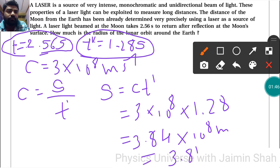Now to convert into kilometer by thousand, so 3.84 into 10 raise to 5 kilometer. So this is the distance from earth to moon. We can also tell that this is the radius of the lunar orbit around the earth.